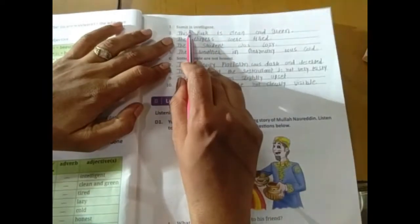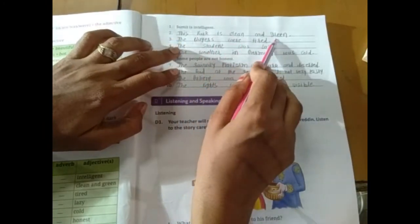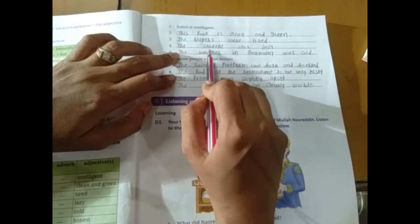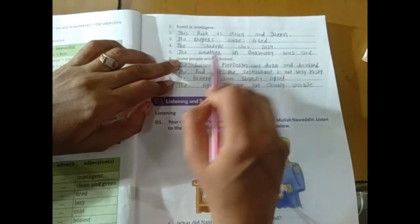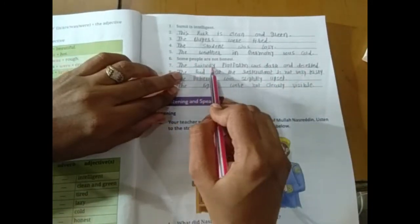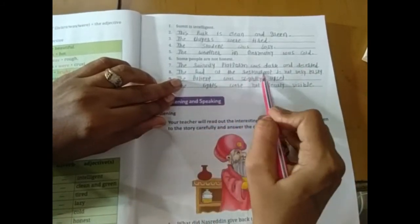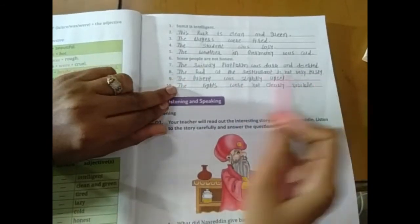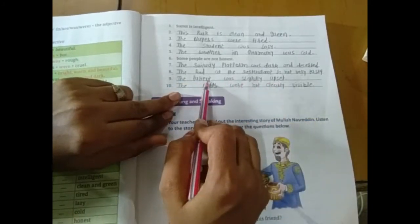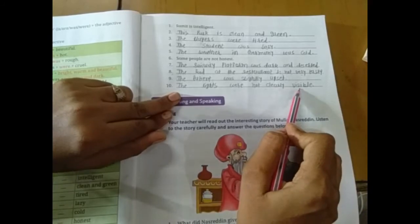First, the community is intelligent. Second, the spark is green and green. Third, the players were tired. Fourth, the students were busy. Six, the weather in Germany was cold. The food at the restaurant is not very tasty. The patient was slightly upset. Ten, the rights were not clearly visible. Okay?